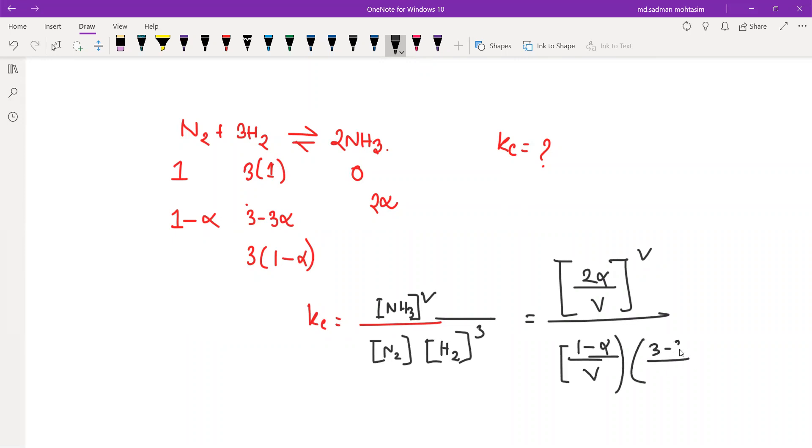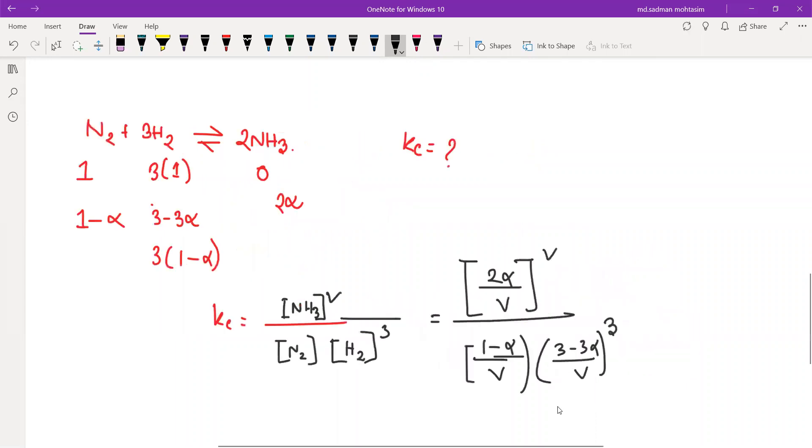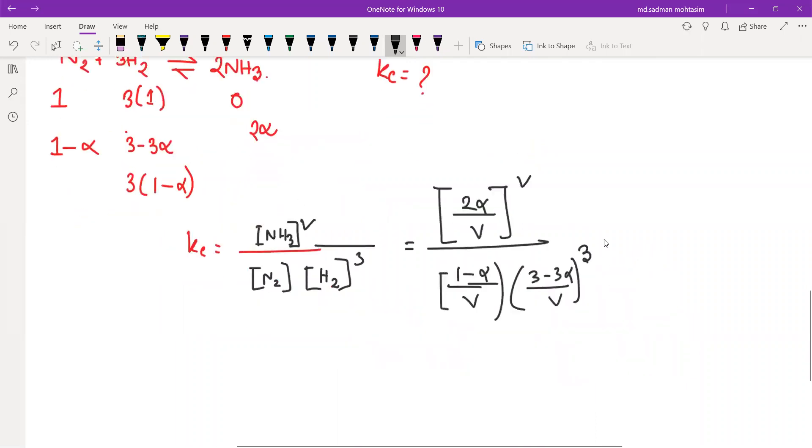See three minus three alpha by V. I can write it to the power square for alpha square. One minus alpha V into twenty-seven one minus alpha cube by V cubed.